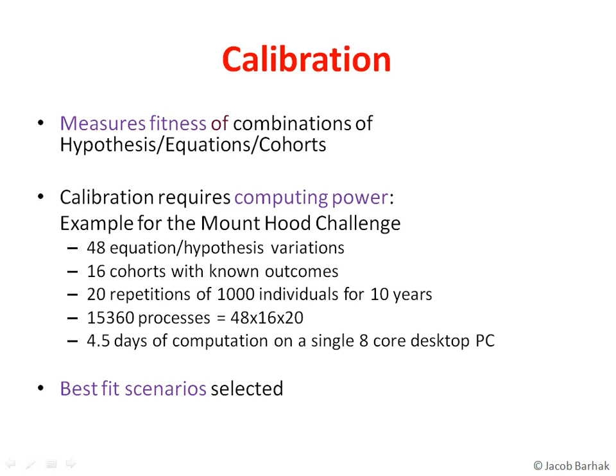Fortunately, computing power is cheap today. For the Mount Hood Challenge, where diabetes models are compared and contrasted, 48 equation variations were tested against 16 cohorts with known outcomes. Each simulation included 20 repetitions of 1,000 individuals for 10 years — Monte Carlo simulations. Overall, there are about 15,000 processes running in the system. This took about four and a half days on a single 8-core computer. At the end of the process, all scenarios are ranked, so hypotheses and equations can be evaluated against different population cohorts.